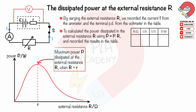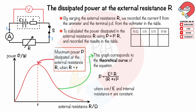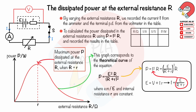The maximum power P dissipated at the external resistance R occurs when the external resistance equals the internal resistance. The shape of this graph corresponds to the theoretical curve of the equation P equals E squared R divided by (R plus r) squared, where EMF E and internal resistance r are constant. This equation is derived from P equals I squared R, using I equals E divided by (R plus r), and substituting to get P equals E squared R divided by (R plus r) squared.